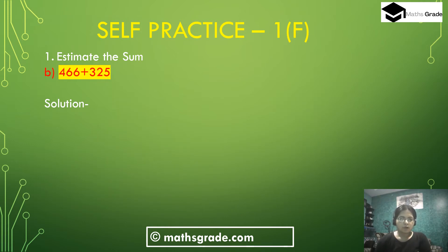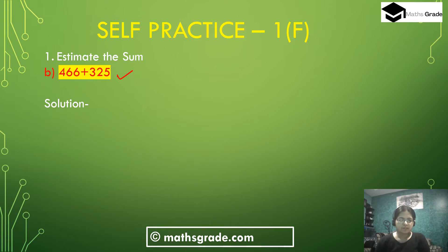Now question number 1, part B: 466 plus 325. First round off this number to the nearest 100. This is a 3-digit number, so first round off 466 and 325 to the nearest 100.